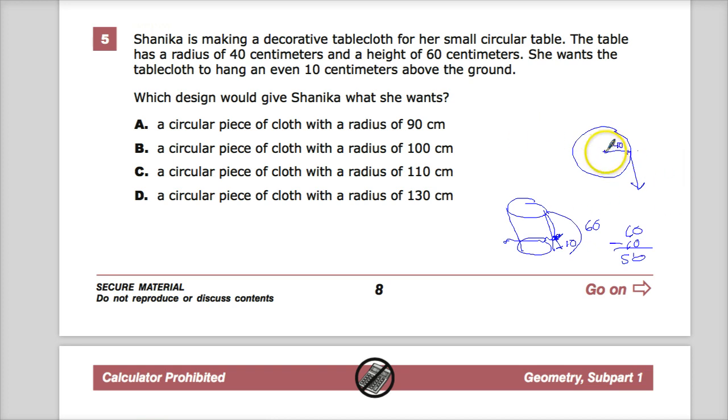I just need to know that to go from this center point, it would take me 40 to get over, and then it would take 50 down. So 40 plus 50 equals 90. So she'll need a circular piece of cloth with a radius of 90.